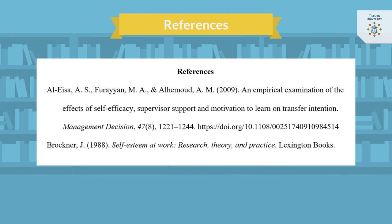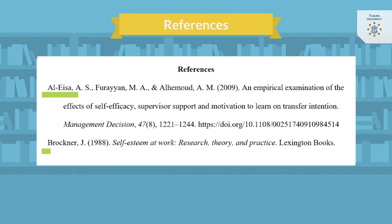The reference starts with the last name of the author or authors. The author may be a single person, a group of people, a corporation, or any combination of these. Start with the last name of the first author, followed by a comma and the initials, separated by a period and space. Separate the names of multiple authors with commas. Before the last author's name, you should also insert an ampersand.